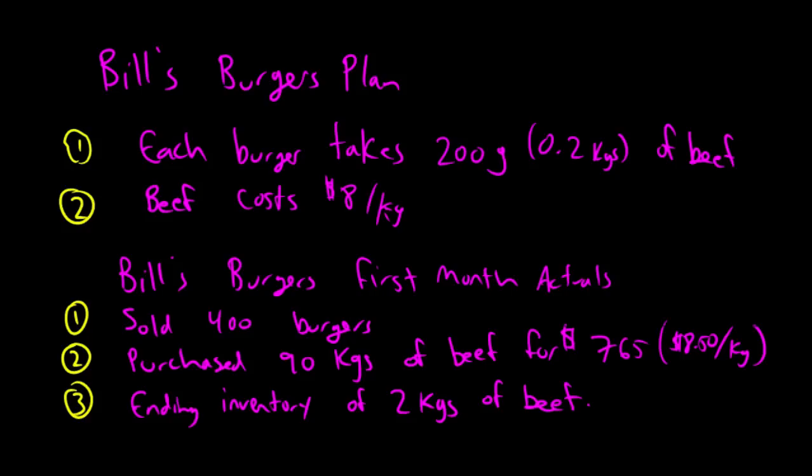He measured it out and said, for him, the perfect burger is going to take 200 grams of direct material. 200 grams, thankfully metric is nice and easy, converts into 0.2 kilograms of beef. Beef costs $8 a kilogram. Well, that's what it cost when he was planning. With those planning numbers, he said to himself, it's $8 a kilogram, it takes 0.2 kilograms.